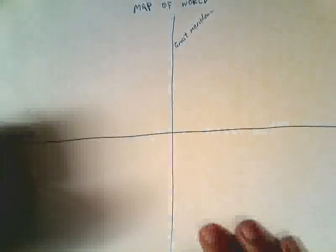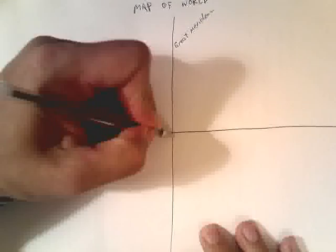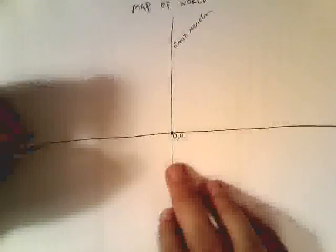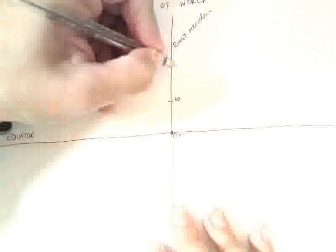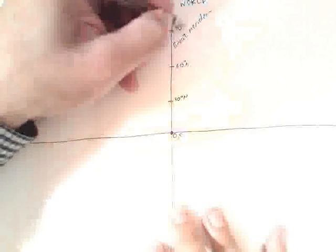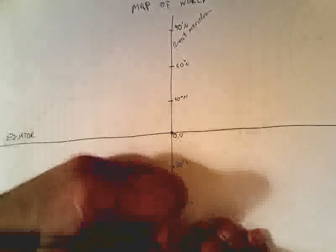You might remember this from previous maths — it's essentially a Cartesian plane, with our origin at 0, 0. Now we measure the Great Meridian going up in 30s: 30 degrees, 60 degrees, 90 degrees — that's where it ends, that's where the North Pole is. All of those are North. Then going down: 30 degrees South, 60 degrees South, 90 degrees South. So we've got a North and a South here.